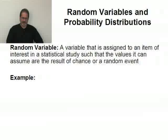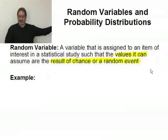Now a random variable is actually just a variable that is assigned to an item of interest in a statistical study such that the values that it can assume, the values that's possible for it, are the result of chance or random event. In reality, all the variables we've been talking about since the first day of class have been random variables. We are just now introducing the term random to it.